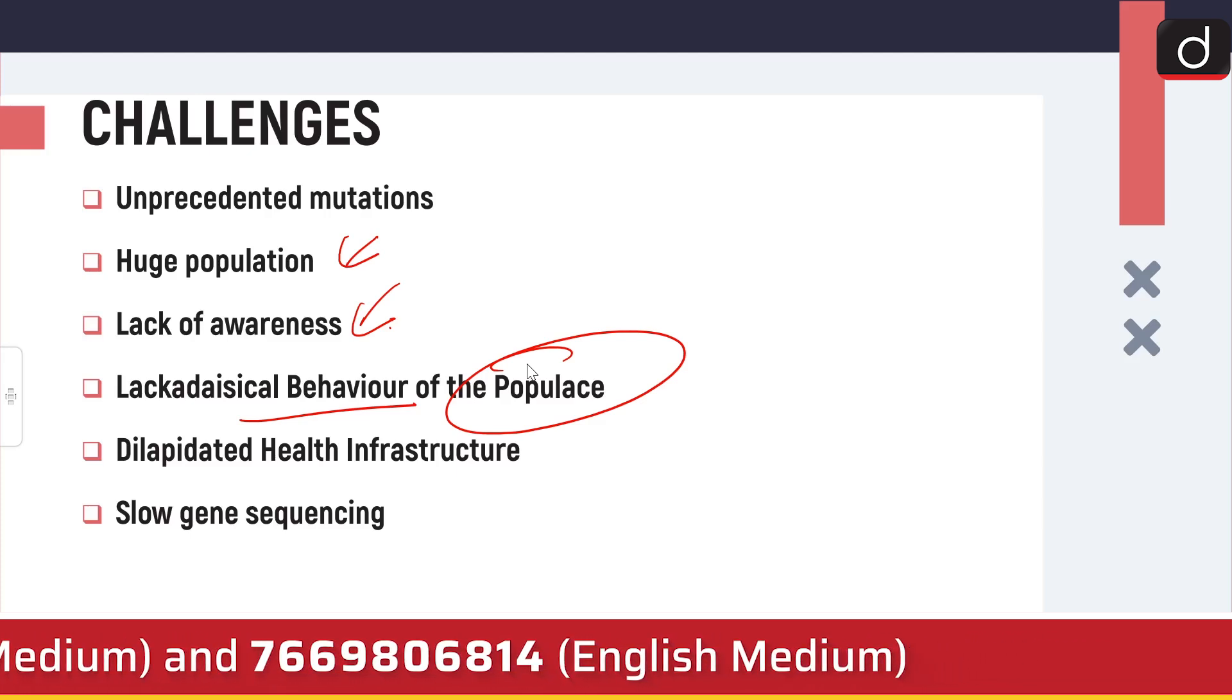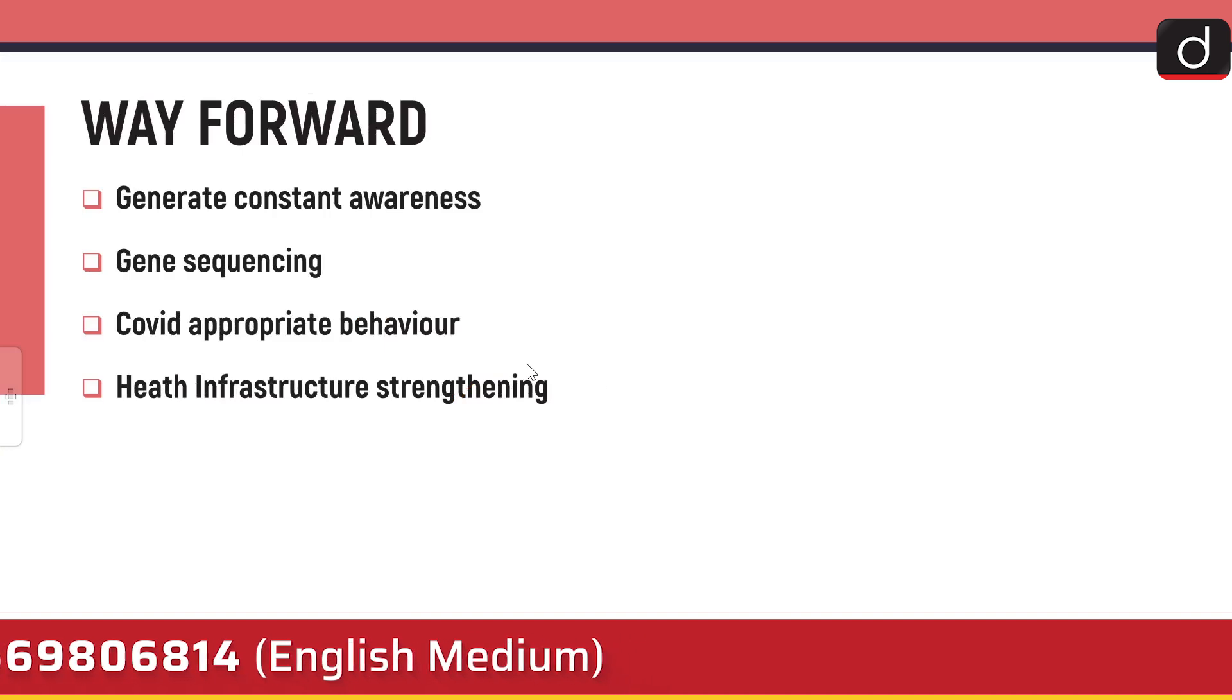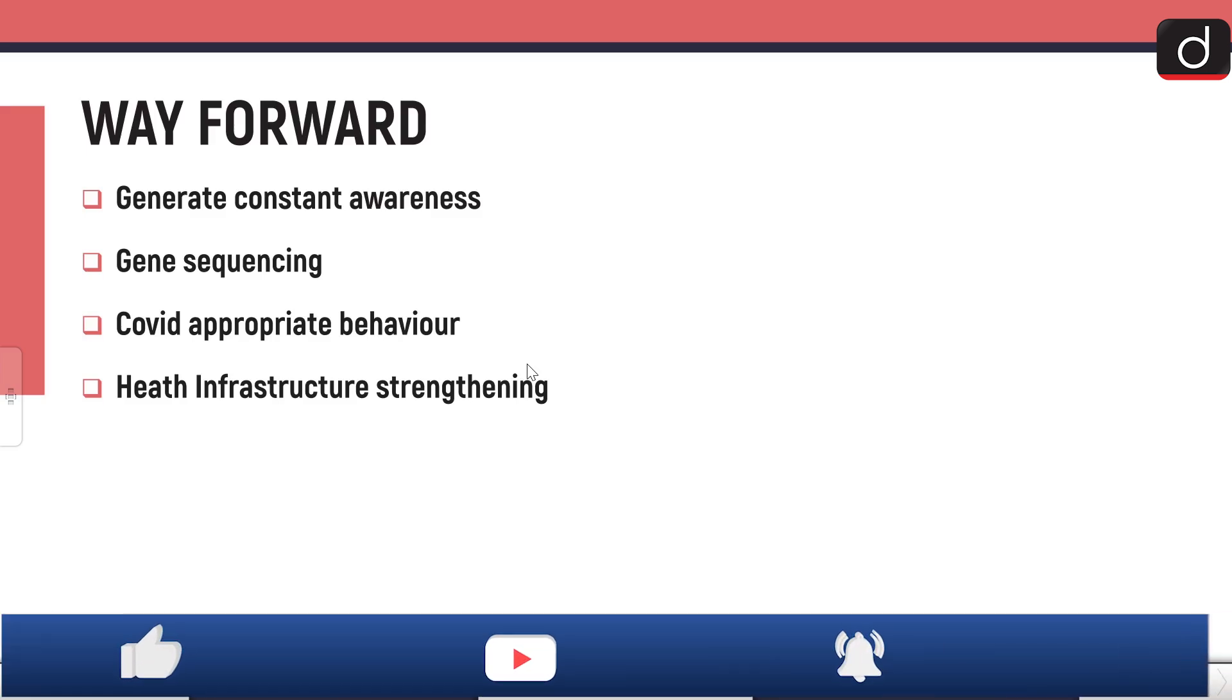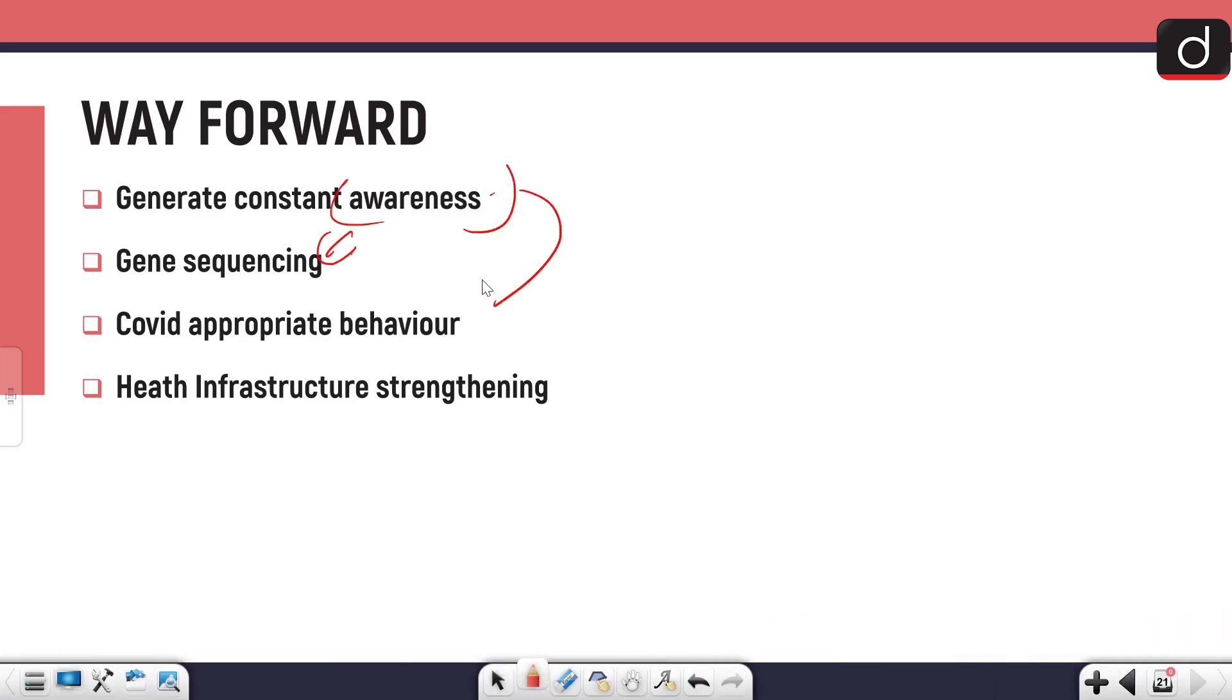What is the way forward? Constant awareness should be generated through gene sequencing for the public to know what a mutated virus is and what are the symptoms. They should follow COVID appropriate behavior. They should not remove their masks even after vaccination, because we've seen many cases of infection after vaccination. Although hospitalization rate is very low, re-infections are happening. So COVID appropriate behavior - following social distancing, physical distancing norms, washing hands all the time when we go out, properly wearing masks - everything should be followed.